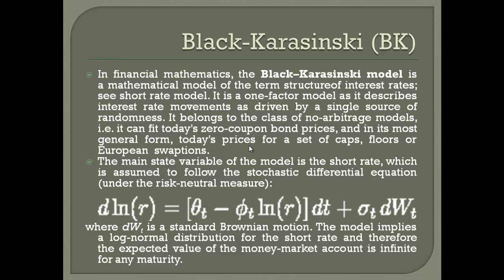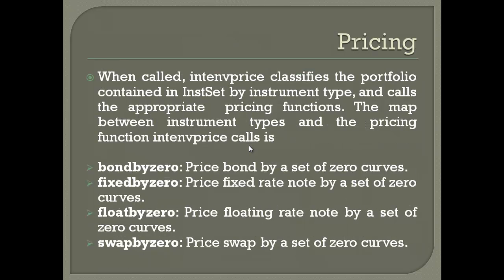Most of these models are one-factor models, driven by a single source of randomness. The Black-Karasinski model is based on Brownian motion — you can think of it as having a drift component and a disturbance component, with log-normal distribution assumed. Interest rates have a drift — if they are going down they continue going down — with a disturbance based on past volatility. That is how these models are constructed.